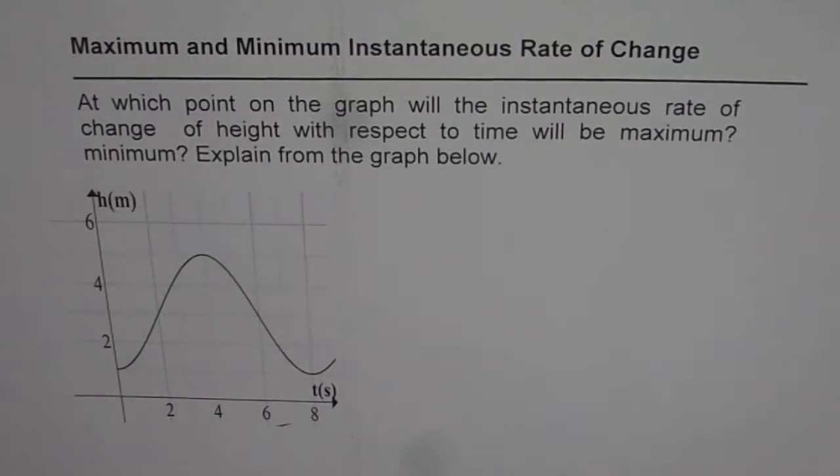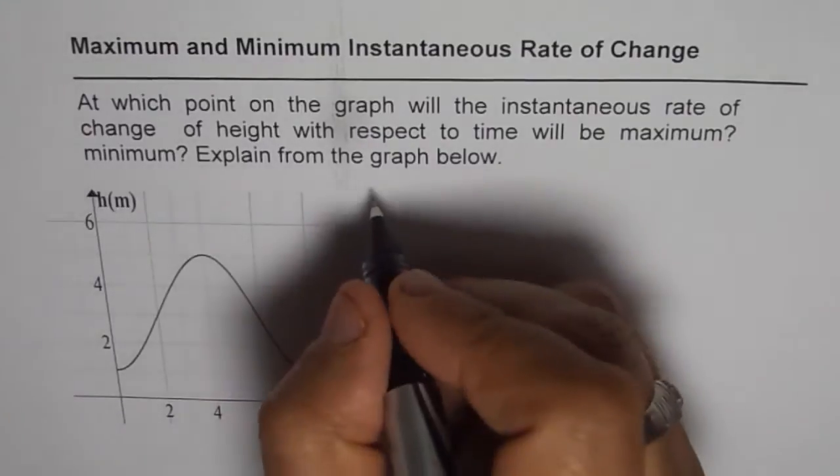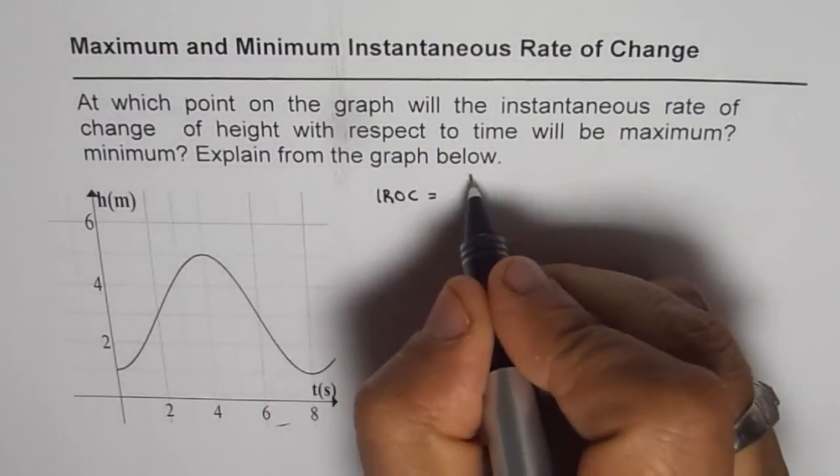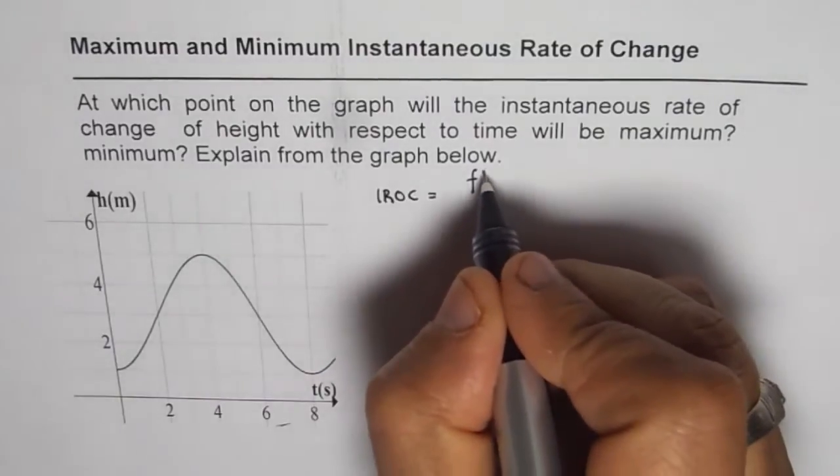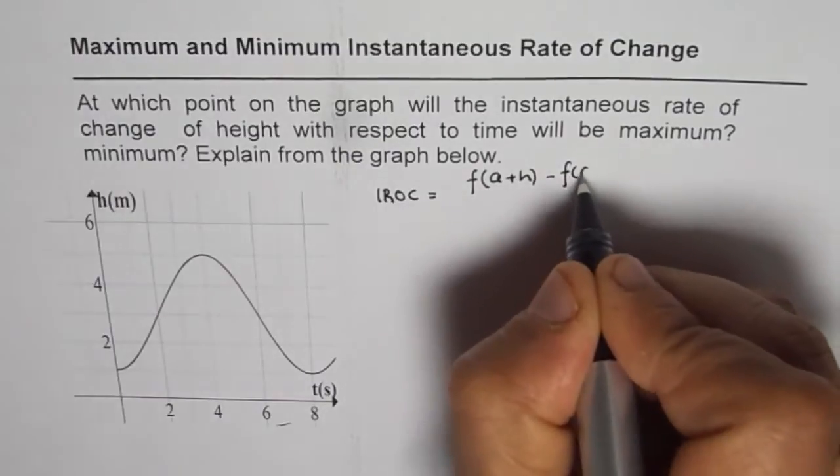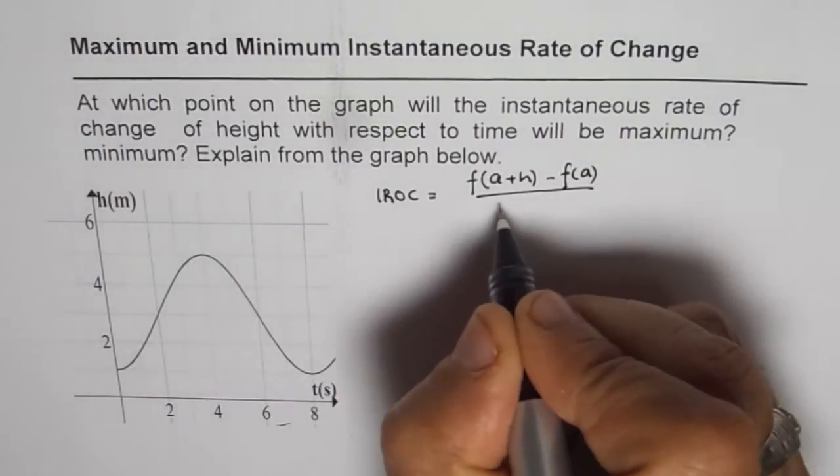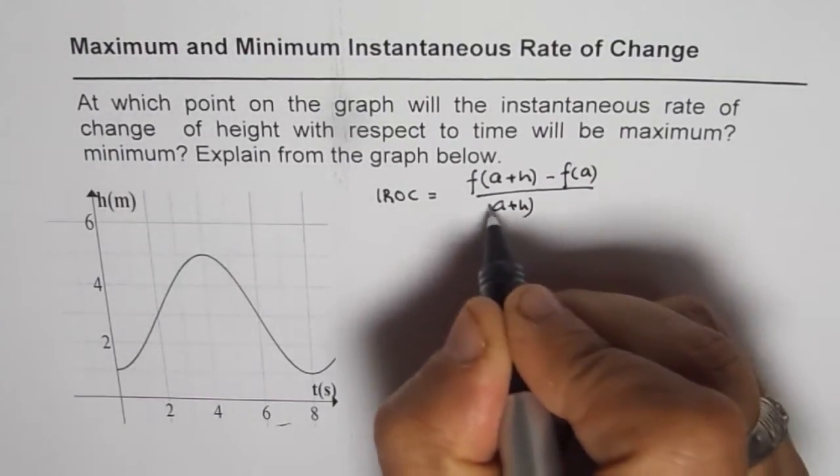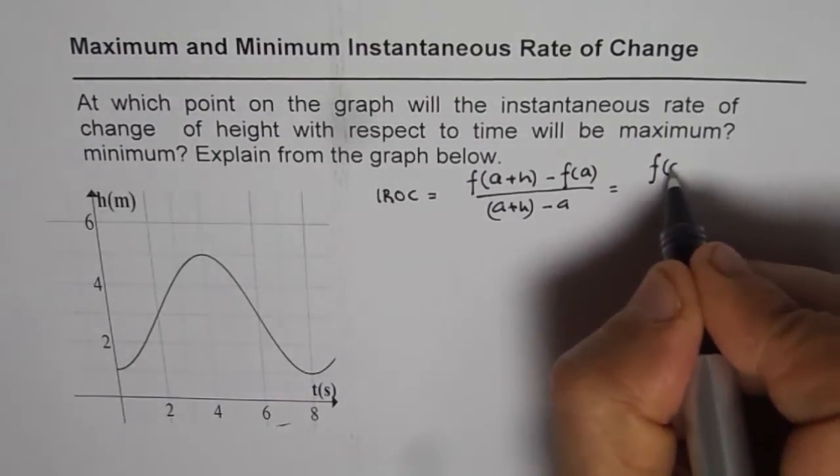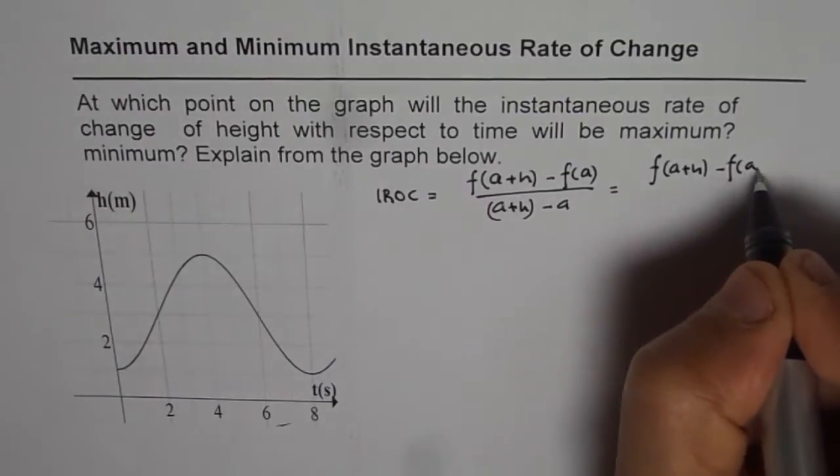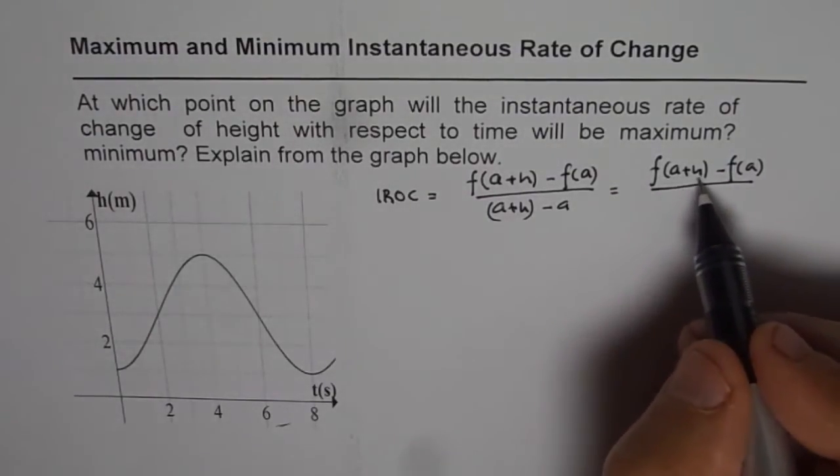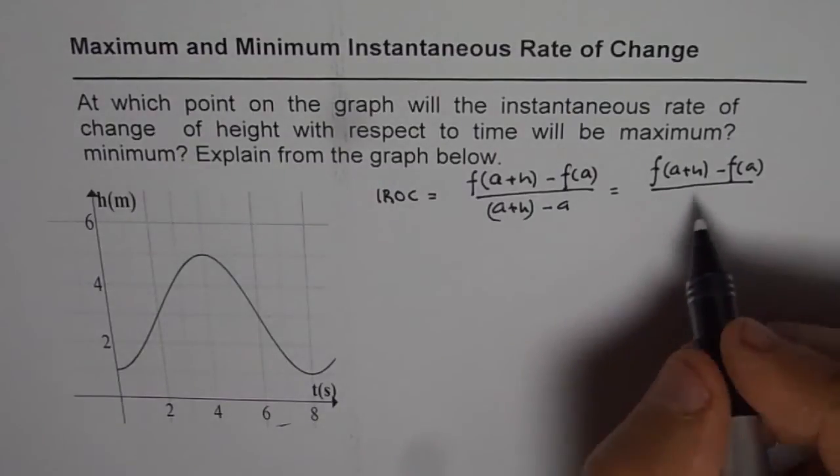So first let us review what is instantaneous rate of change. As you know, instantaneous rate of change is, let us say, we will write difference quotient formula, which is f(a+h) minus f(a) divided by (a+h) minus a. So basically, the value of the function at a point and the value of the function at a point very close to it, that is what it means.